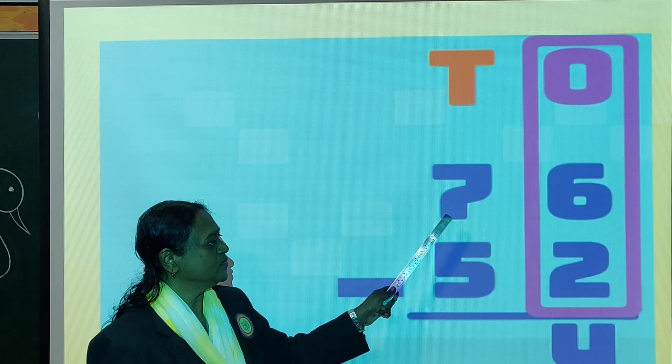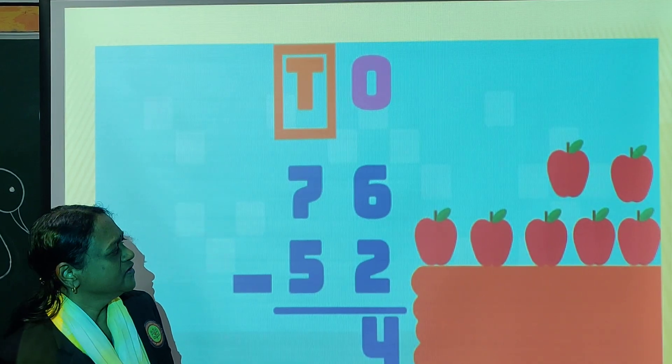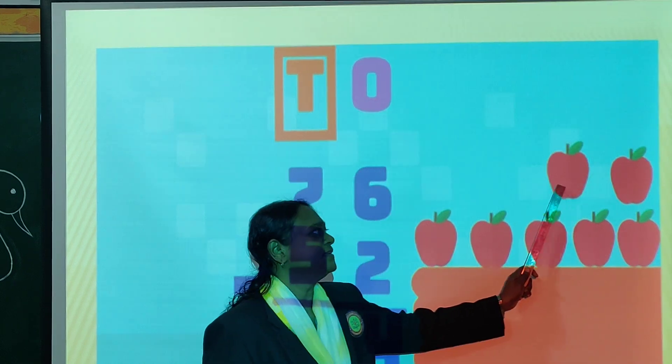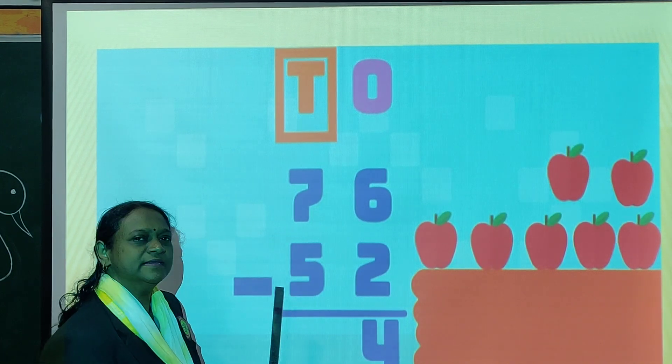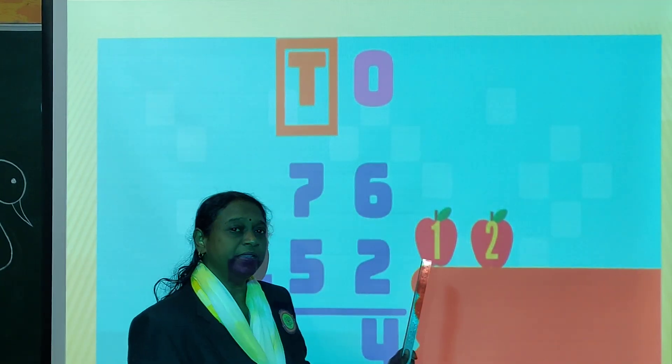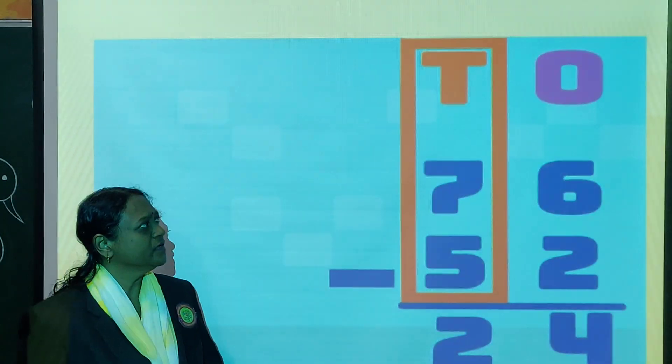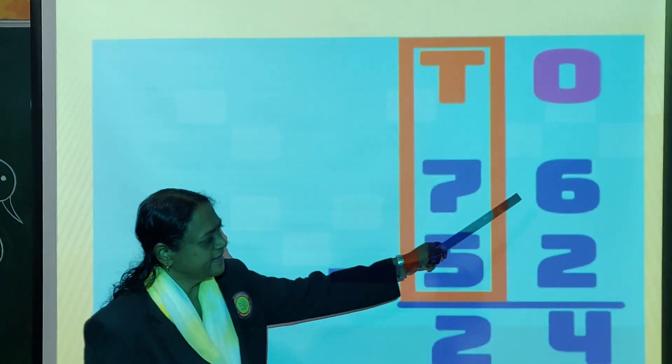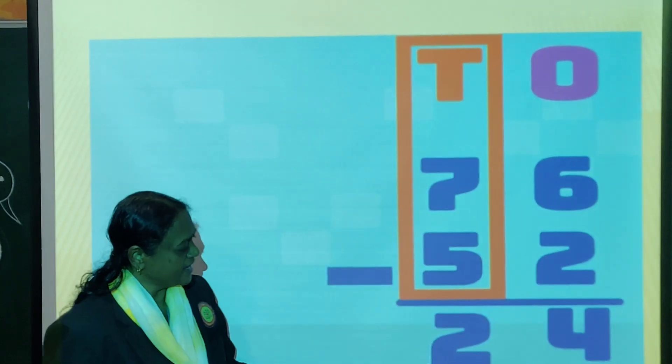Now same way tens. 7 minus 5. Okay, so count 1, 2, 3, 4, 5, 6 and 7. So how many apples here? Tens side, 7. We have to minus 5. So what is the remaining? 1 and 2. So tens side, the answer will be 2. Now ones, 6 minus 2 is 4, tens 7 minus 5, answer is 2.